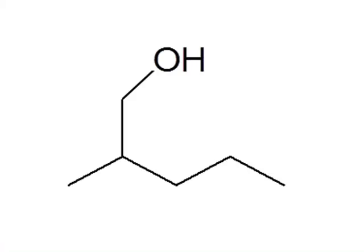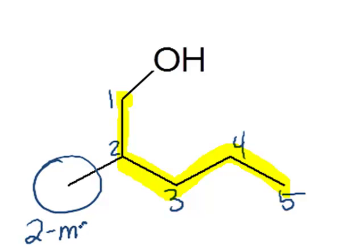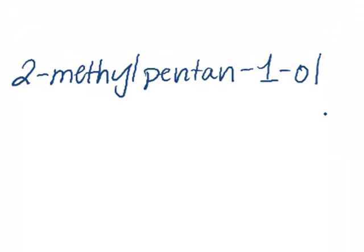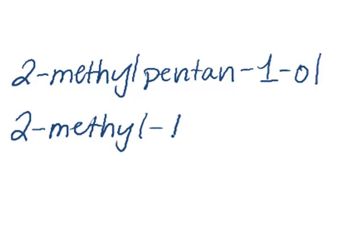Let's try another one. Again, find your longest carbon chain and determine substituents and their locations. The OH group is on the first carbon, so I'll number my chain as carbons 1, 2, 3, 4, and 5, giving a 2-methyl substituent and the alcohol. When I put the name together, one way is to call this 2-methyl-pentane-1-ol because the alcohol is on the first carbon. Alternatively, as your book would write it, 2-methyl-1-pentanol. Either one is completely acceptable.